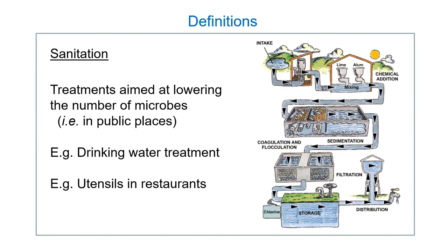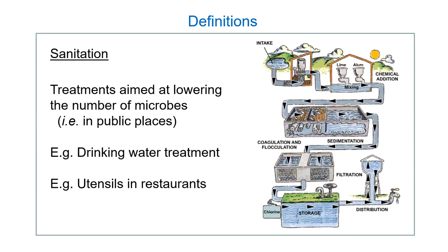Sanitation is often used in public health — for example, water treatment. Another example is restaurant dishwashers running at extremely hot temperatures, which hopefully eliminates a good chunk of the microorganisms that might be around.